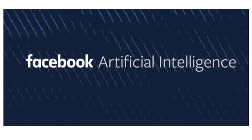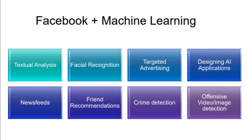We've discussed many examples of how Google uses machine learning algorithms. Similarly, Facebook also uses machine learning algorithms — for example, textual analysis, facial recognition, targeted advertising, designing AI applications, trend recommendations, news feeds, crime detection, and offensive video or image detection.